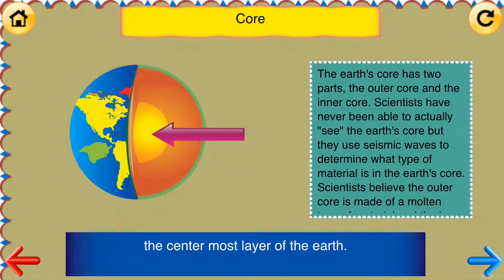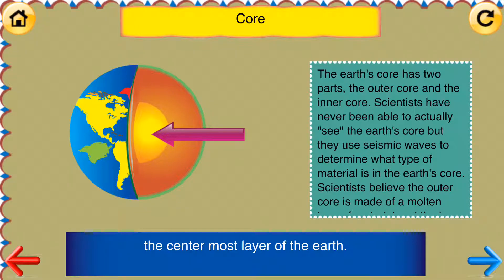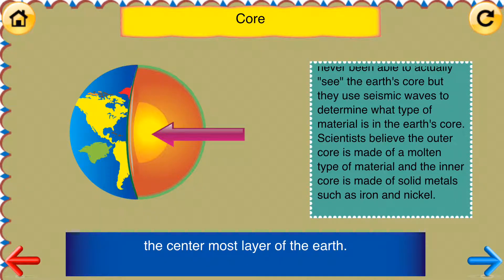Core: The center-most layer of the earth. The earth's core has two parts: the outer core and the inner core. Scientists have never been able to actually see the earth's core, but they use seismic waves to determine what type of material is in the earth's core. Scientists believe the outer core is made of a molten type of material, and the inner core is made of solid metal such as iron and nickel.